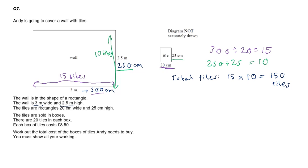Let's keep going. The tiles are sold in boxes. There are 20 tiles in each box. So let's work out how many boxes we need to buy.